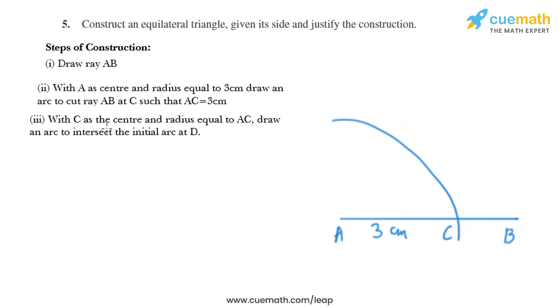Now in the next step, with C as the center and radius equal to AC, draw an arc to intersect the initial arc at D. Now we'll put the compass at C and we'll take the radius 3 centimeter and we'll draw an arc like this and we'll mark the point as D.